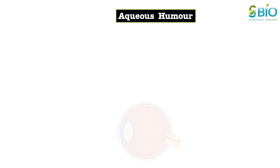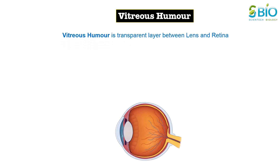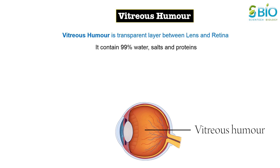Aqueous humor is a watery fluid present between the cornea and the lens. This fluid contains glucose, amino acids and respiratory gases. It nourishes the eye and keeps it inflated. Vitreous humor is a transparent, jelly-like substance present between the lens and the retina. It contains 99% water, some salts, protein, etc. The main function of vitreous humor is to protect the eye and maintain its spherical shape.